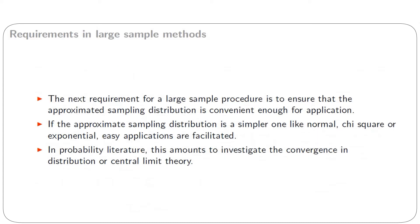The next requirement for a large sample procedure is to ensure that the approximated sampling distribution is convenient enough for application. If the approximate sampling distribution is a simpler one like normal, chi-square, or exponential, easy applications are facilitated. In probability literature, this amounts to investigating convergence in distribution, or central limit theory.